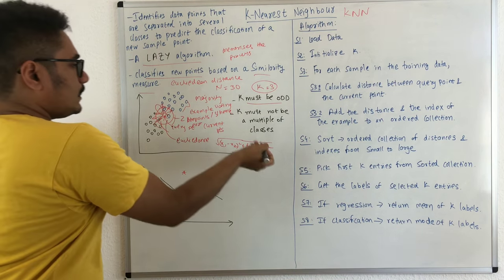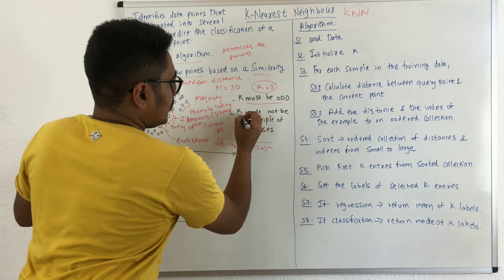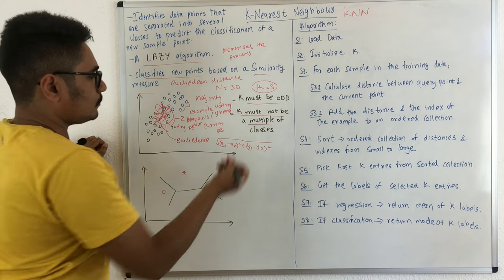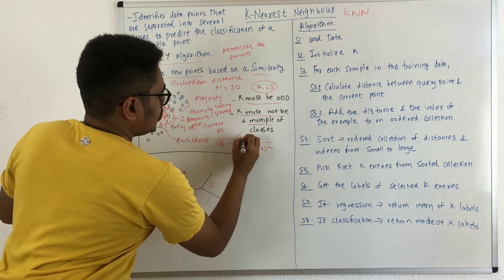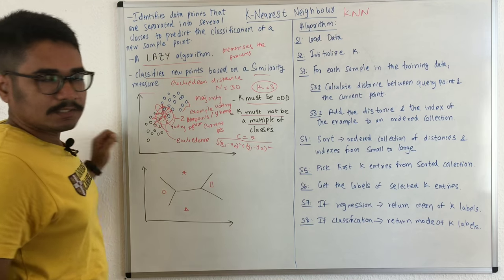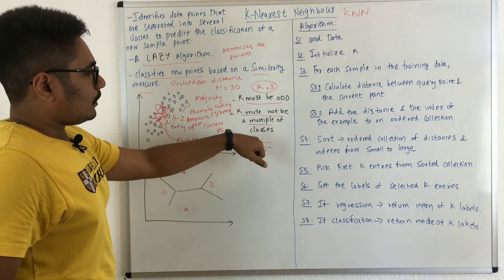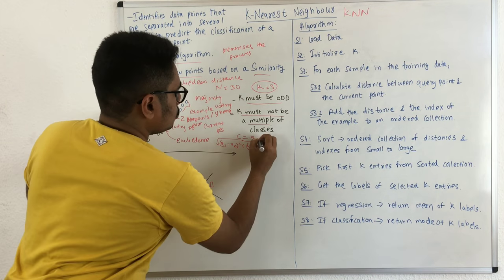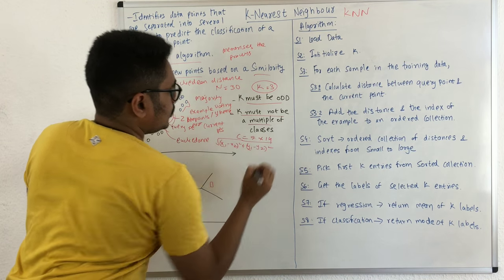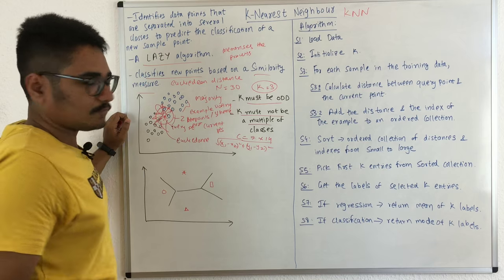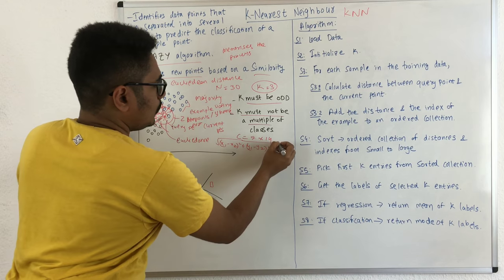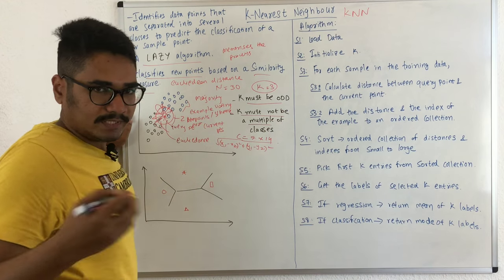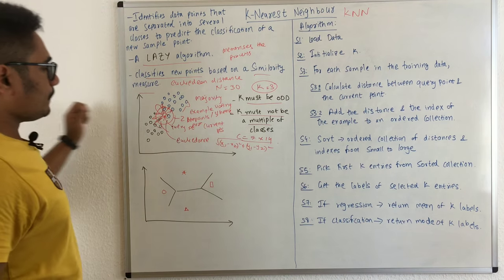Another condition is that k must not be a multiple of the number of classes. For example, if you have seven classes then k should not be equal to 7 × 2 = 14. This would also cause a tie in the class assignment.